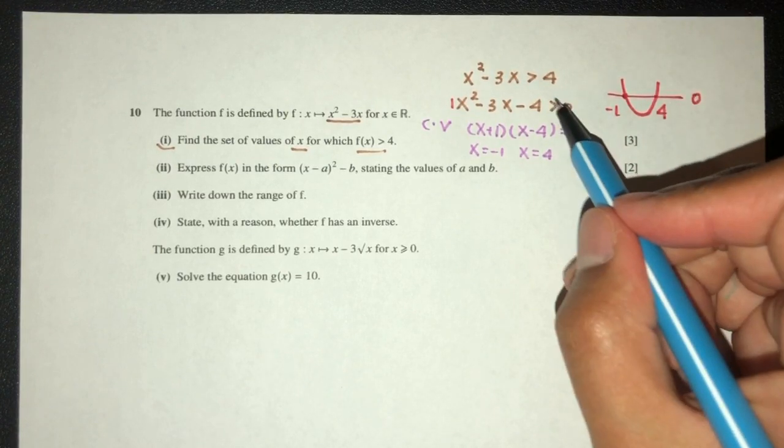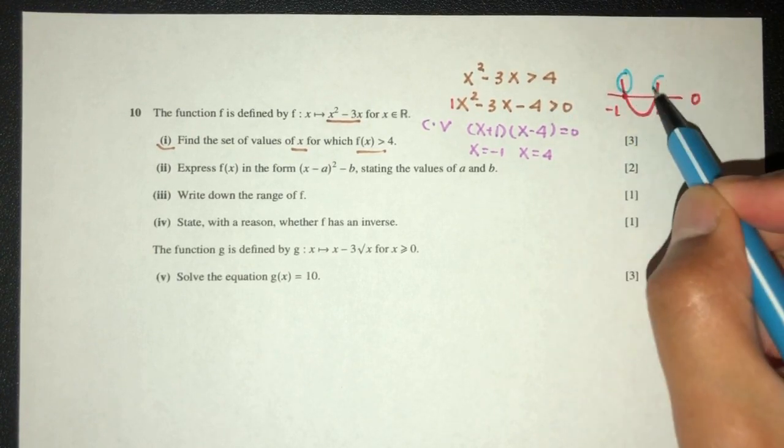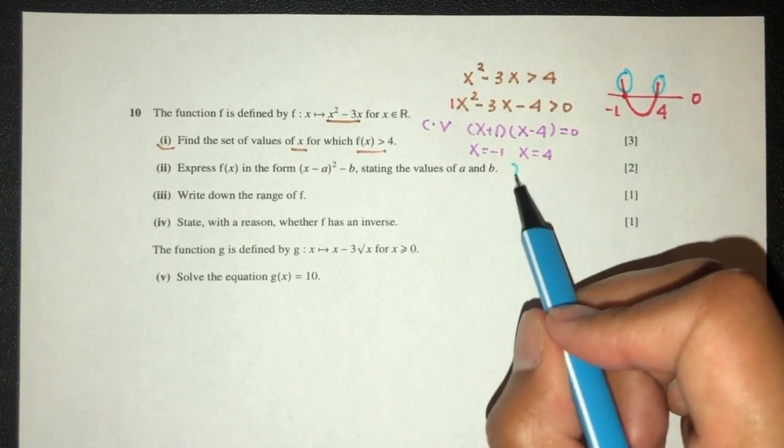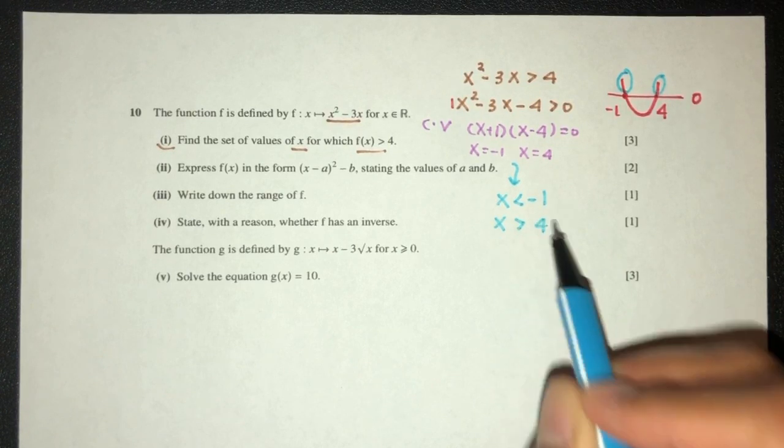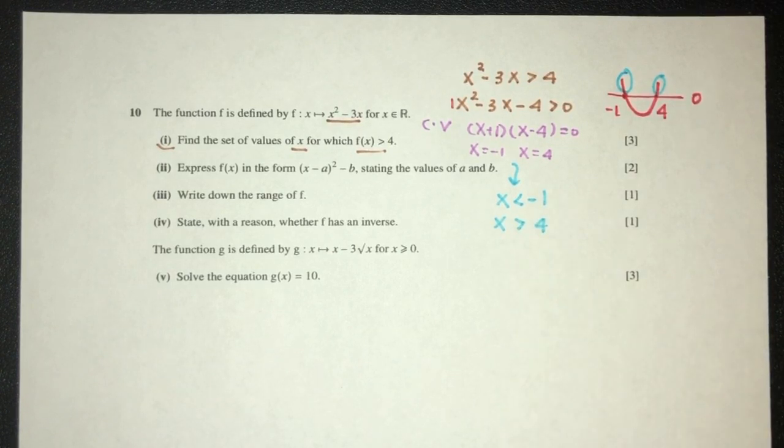Now we need the values to be more than 0, it has to be over here and over here. So the values of x could be, x have to be less than minus 1, x have to be more than 4. So these are the set of values of x for which that is possible. That is part one of the question. Again, these questions, we have seen this many times before in AdMath.